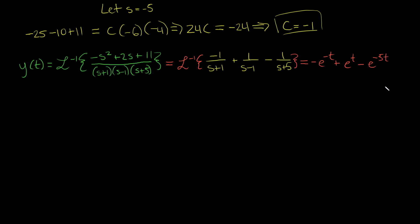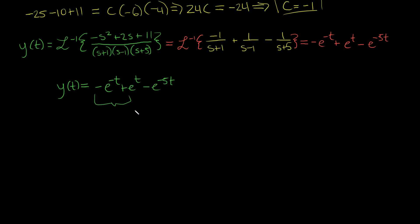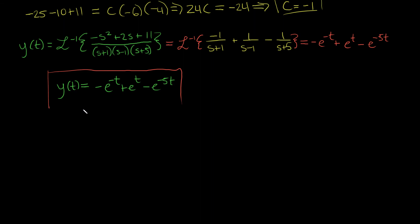That's our answer. So our solution to the initial value problem is y(t) equals negative e to the negative t, plus e to the positive t, minus e to the negative 5t. You can see this looks very much like some kind of homogeneous solution plus some particular solution. Hopefully you can see the Laplace transform is a nice and very general method for solving whatever initial value problem your differential equation happens to be.